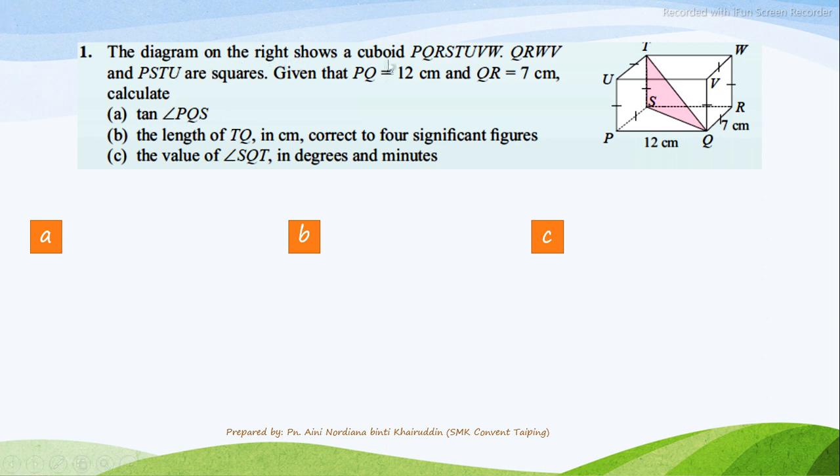Question number 1. The diagram on the right shows a cuboid PQRSTUVW. QRWV and TSTU are squares. Given that PQ equals to 12 cm and QR equals to 7 cm. Calculate tangent angle PQS.